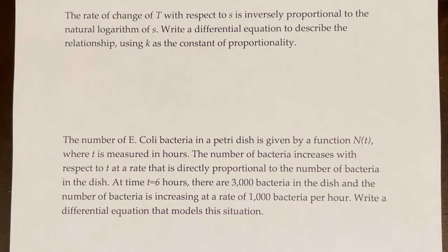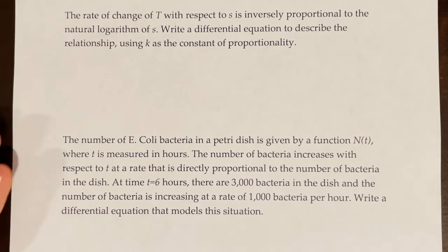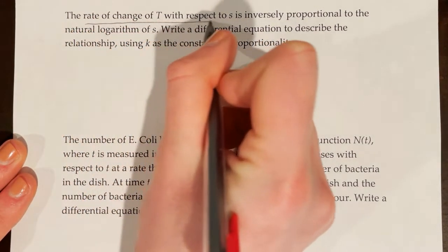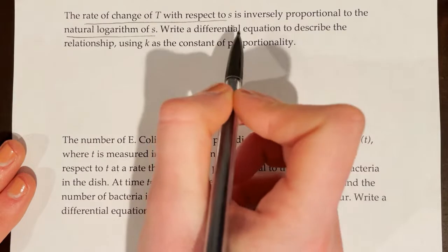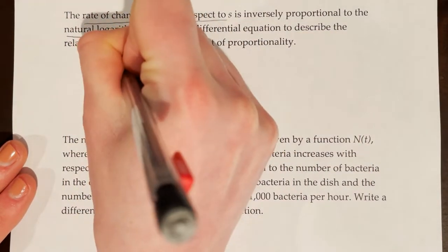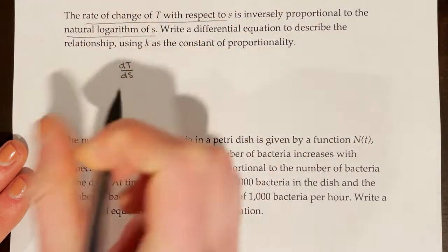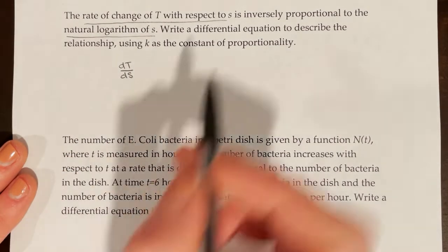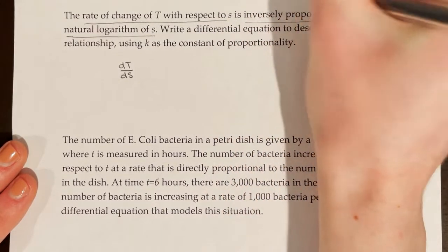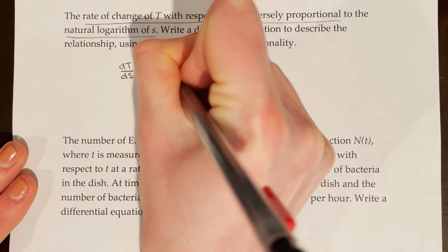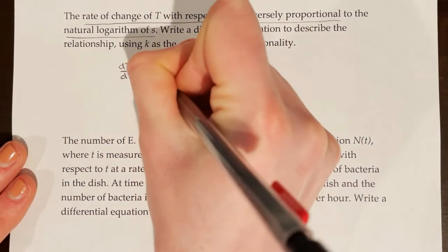The rate of change of t with respect to s is inversely proportional to the natural logarithm of s. Write a differential equation to describe the relationship, using k as the constant of proportionality. We need to think: what is proportional to what? The rate of change of t with respect to s is dt/ds, and it is inversely proportional to the natural logarithm of s. Inversely proportional means k over something, so dt/ds is equal to k over the natural log of s. That's our solution.